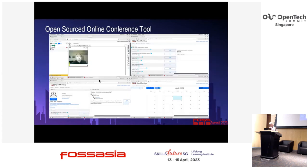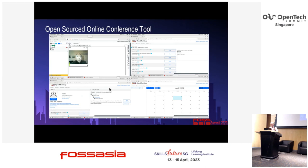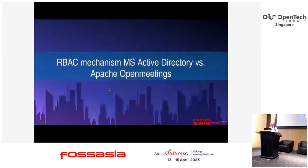Here are some screenshots I took from the platform, because I don't want to waste your time just getting logged in to show all this stuff. So what is the role-based access control mechanism with MS-AD directory and Apache OpenMeetings?